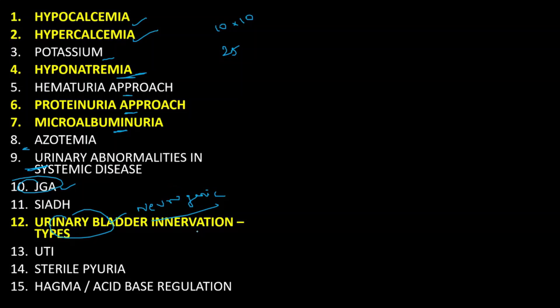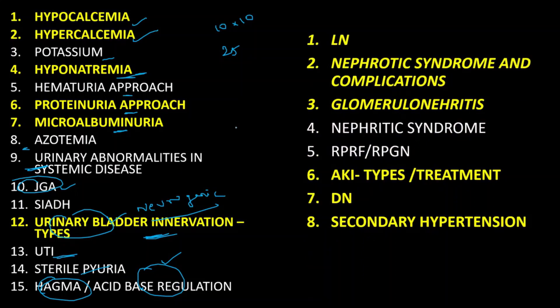Neurogenic bladder and urinary bladder innervation are important not only for the theory exam but also for CNS case questions. Other important topics in the basic section include UTI, sterile pyuria, high anion gap metabolic acidosis, and acid-base regulation. Acid-base regulation and urinary bladder innervation have potential to come in the first paper, because the first paper contains most of the anatomy and physiology related questions.